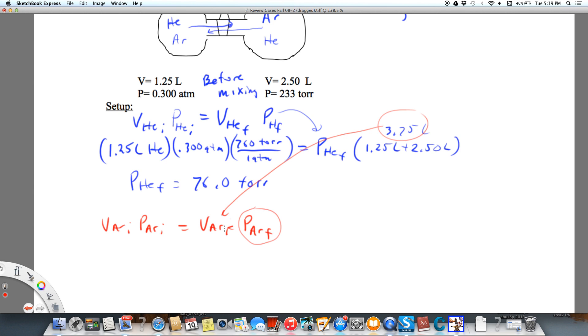We're solving for the final pressure and then we'll add it together with helium. Now the initial volume of argon is 2.50. The pressure is already given in torr, so that's going to be 233 torr.